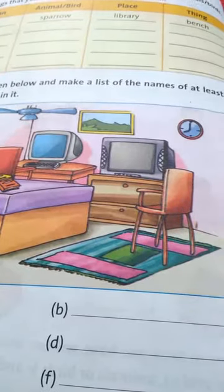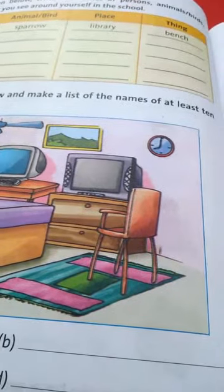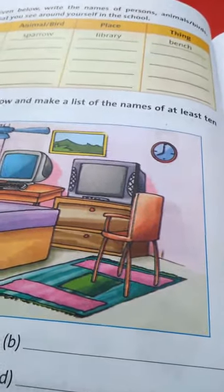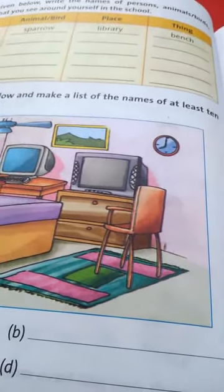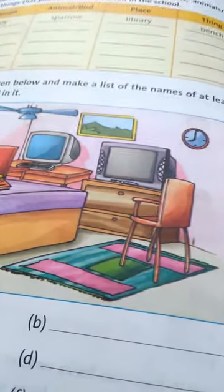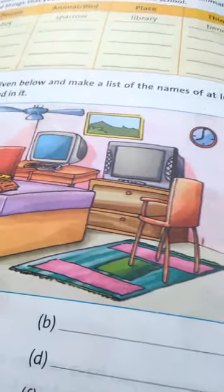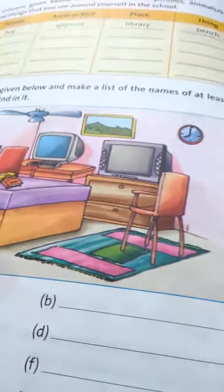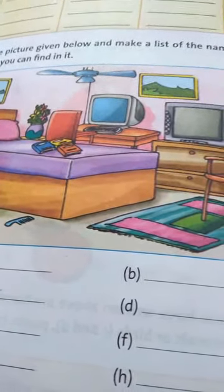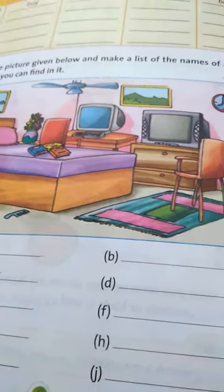Look here, here are some pictures you can see. There is a clock - clock is a common name. Television is a common name, painting is a common name, computer is a common name, chair is a common name. All these names are common.